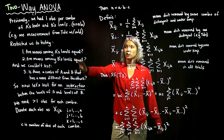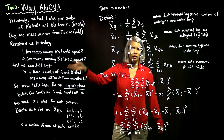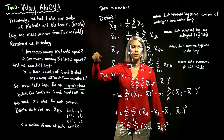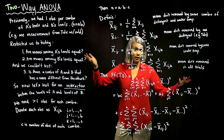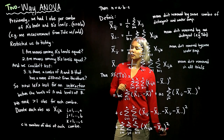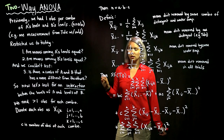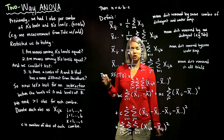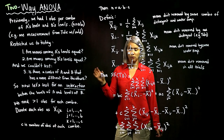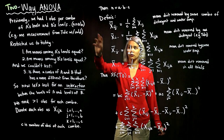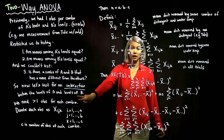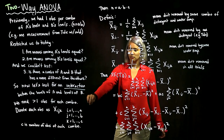So we want to test for this interaction between A and B. What we're going to do is increase our number of observations from one to some larger number C. Now we're going to denote each observation — since we have multiple observations for each combination — and we're going to need three subscripts.